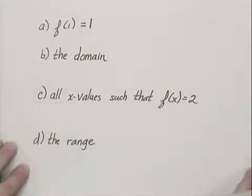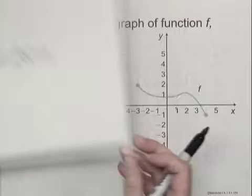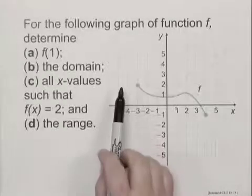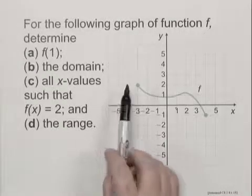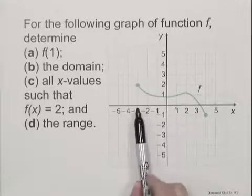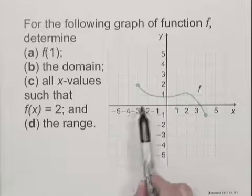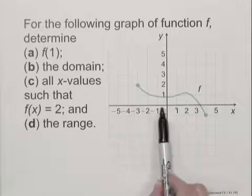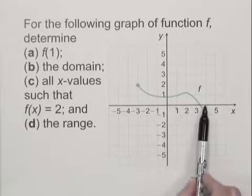We're next asked to find the domain, so we'll look back at the graph. The domain is the set of all x values in the graph. So when we move across here, we see that at negative 3, we have x values, we have points on the graph, all the way across on the x-axis, until x equals 4.